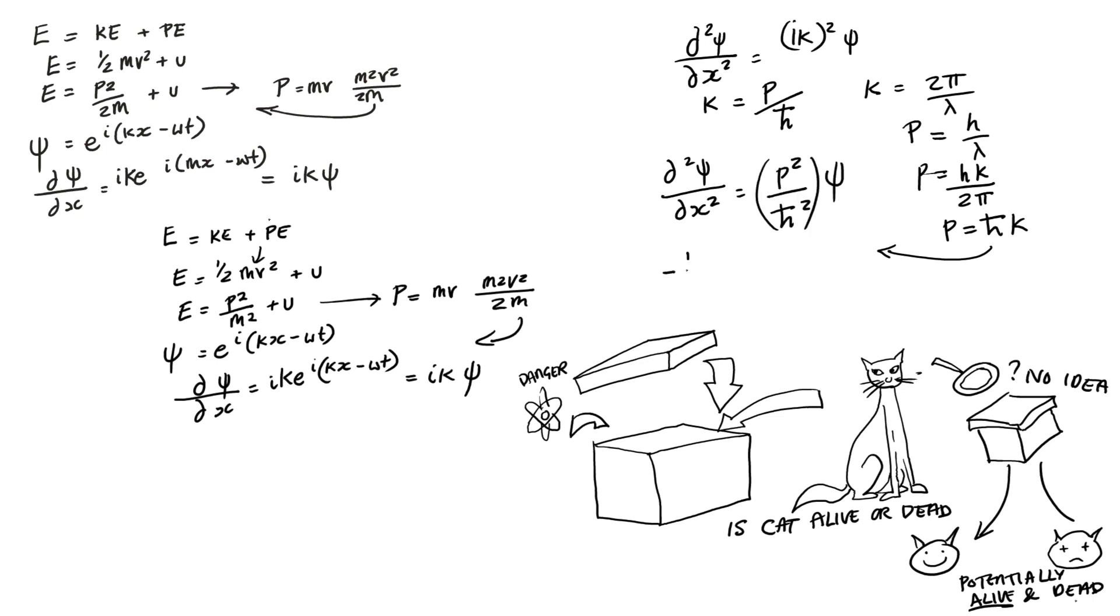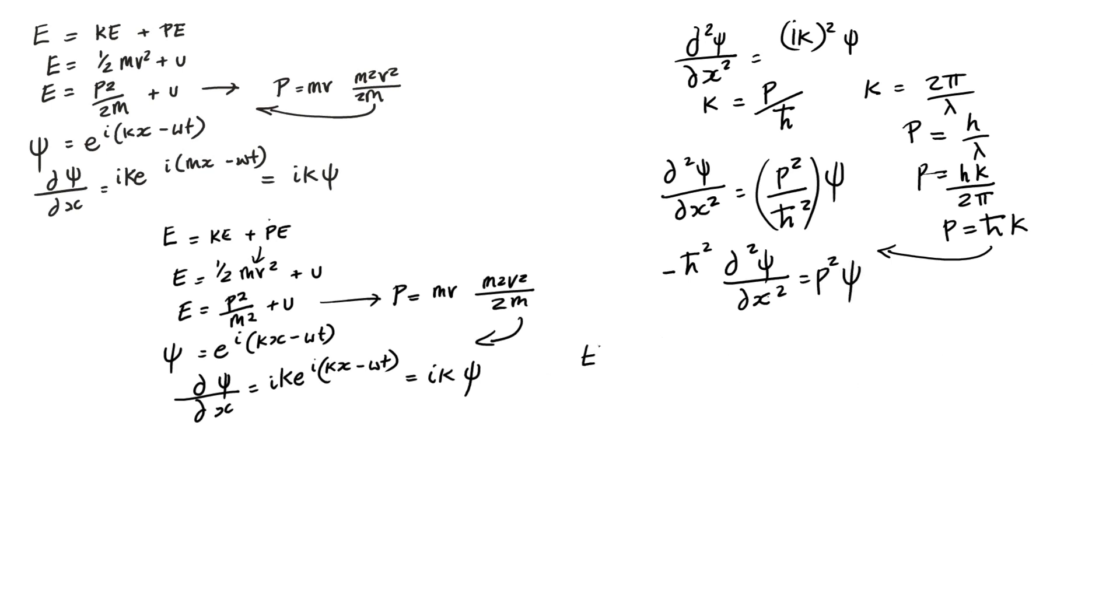Before our observation, the cat was neither alive nor dead. It was in a superposition state, a mixture of both possibilities, with a 50% chance for each possibility.